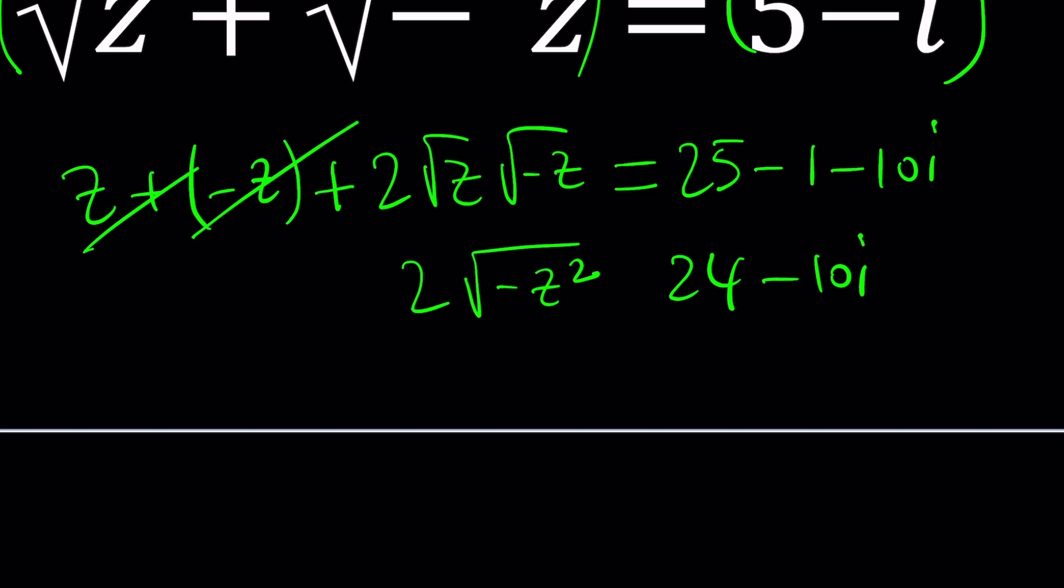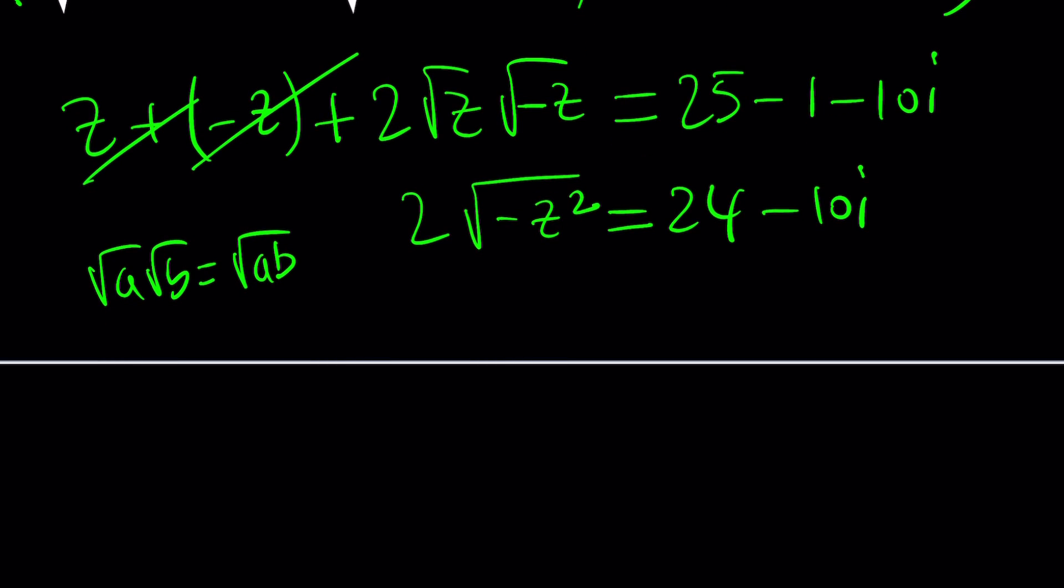And here these two cancel out, and we end up with 2 times the square root of negative z squared. By the way, z times negative z. Oh, wait a minute. When you multiply two radicals, it becomes this, but does this rule apply to complex numbers? Not all the time. You got to be very careful here, but we're just going to ignore all the complications and go with the regular flow. So we can go ahead and divide both sides by 2. That'll give us 12 minus 5i. By the way, this is real cool because 12, 5, 13, that's a Pythagorean triple. It's not a coincidence, obviously. There's a good reason behind it. But anyways, how do we deal with this?